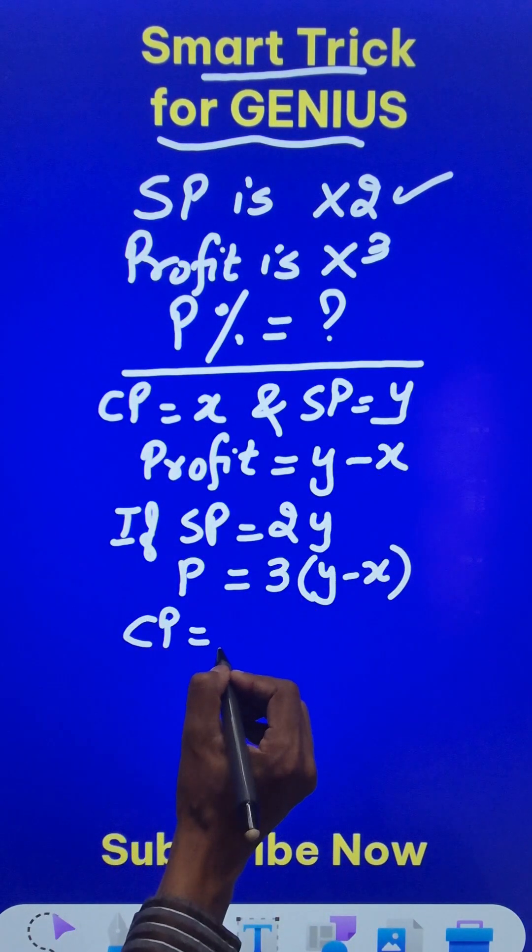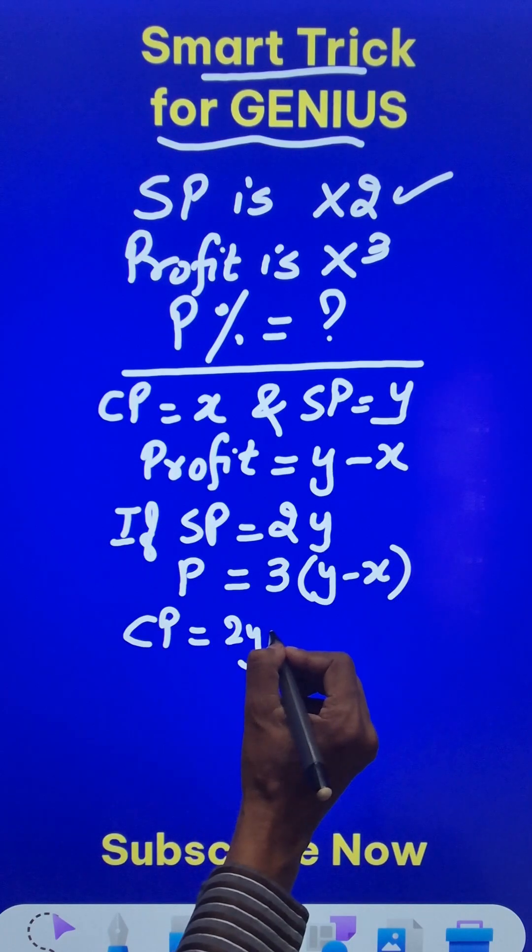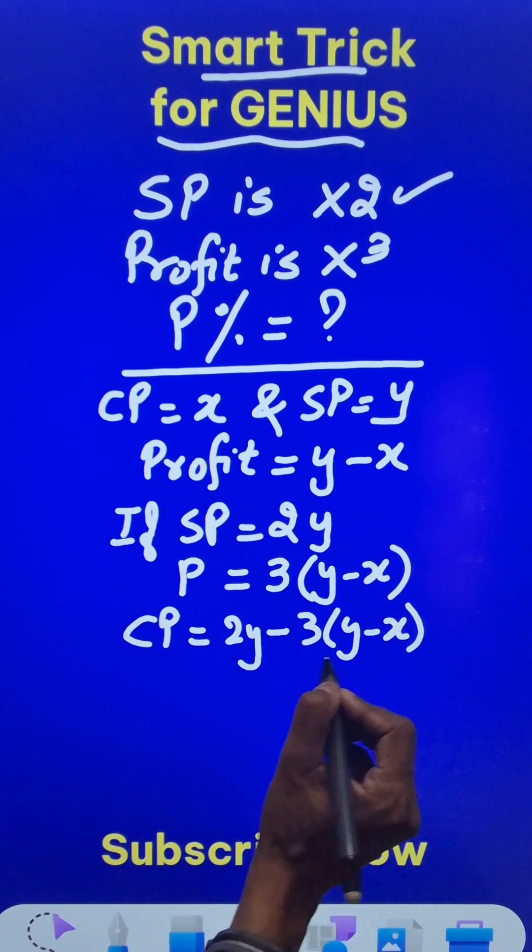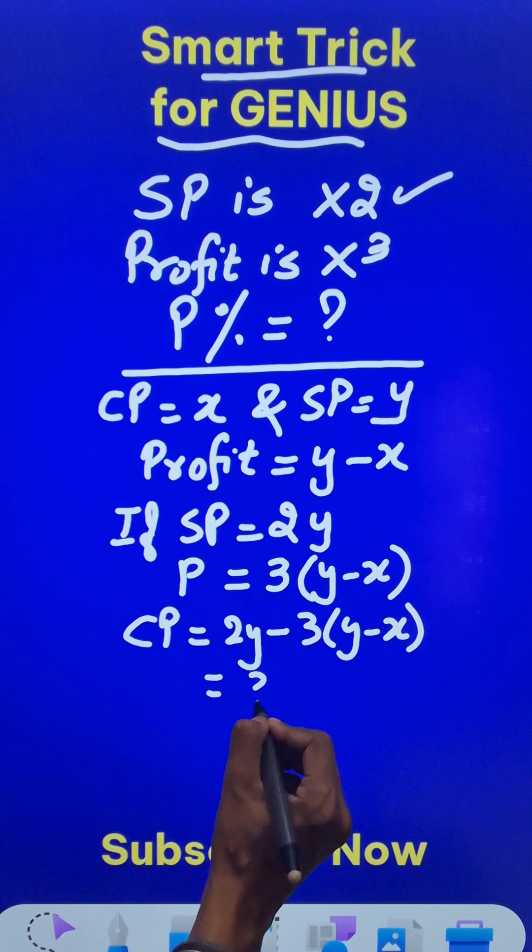What will be the cost price? Cost price is selling price minus profit, which is 2Y minus 3(Y minus X). Therefore, the cost price becomes 3X minus Y.